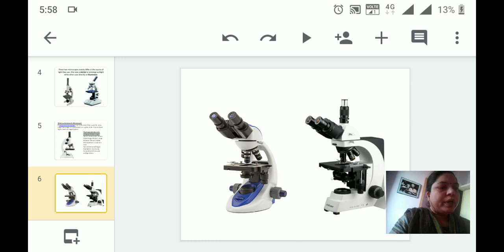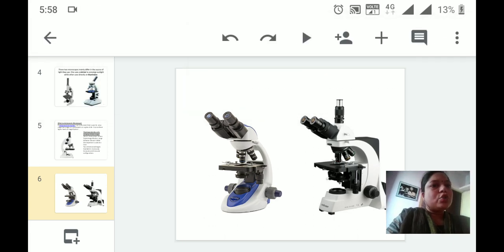Based upon the number of eyepieces that particular microscope is having, monocular is only with one eyepiece, binocular is with two eyepieces, and trinocular is with three eyepieces.